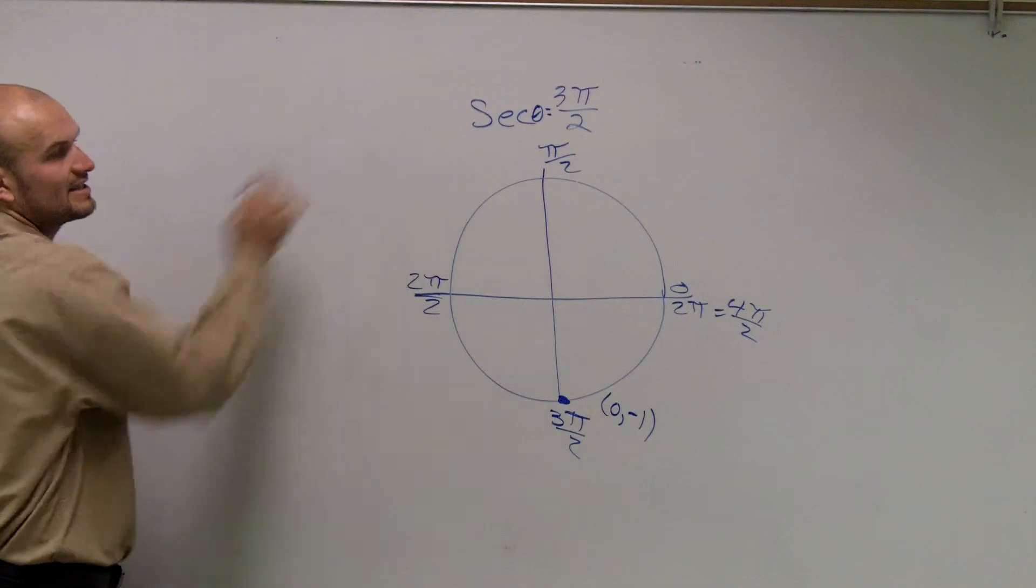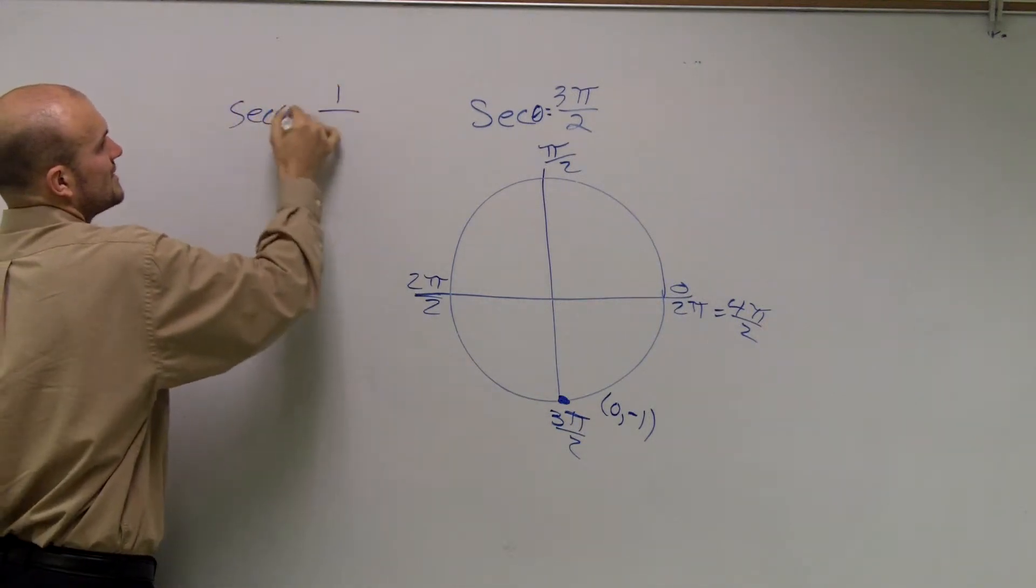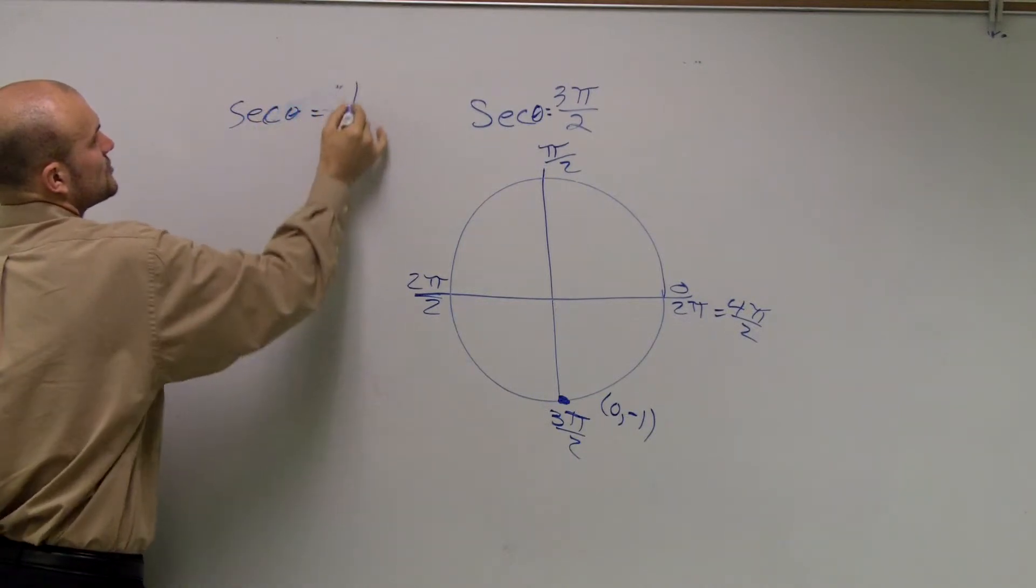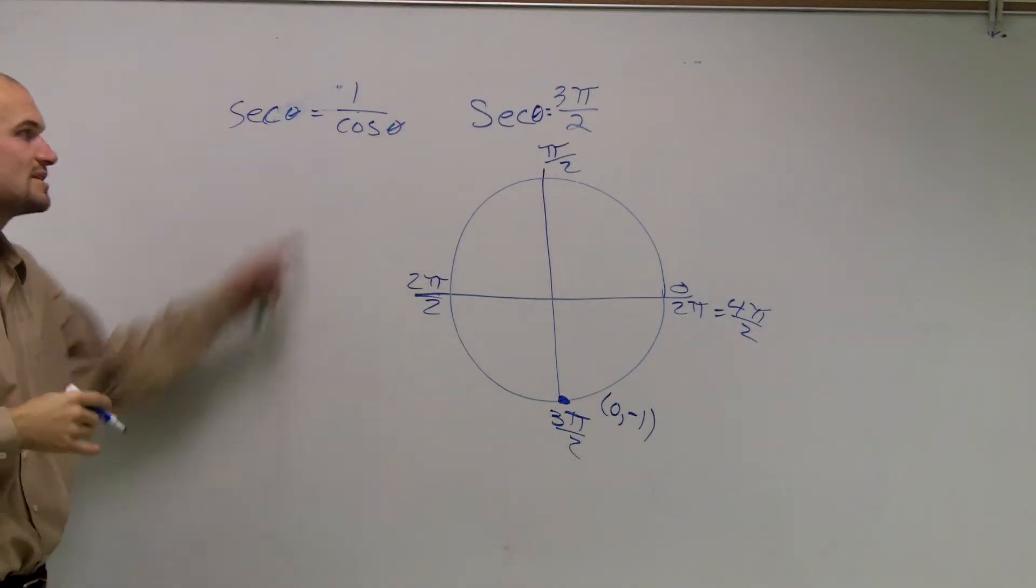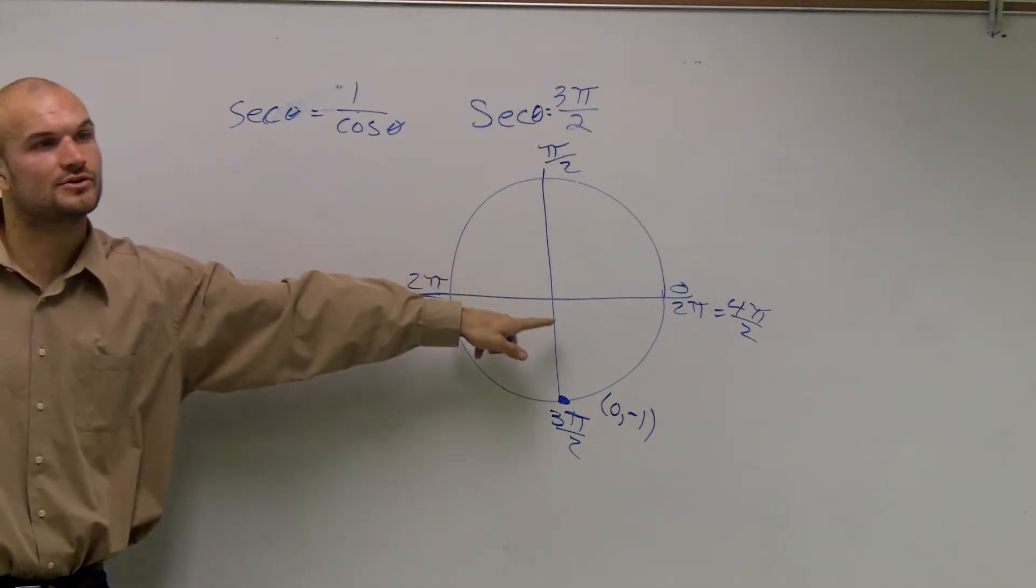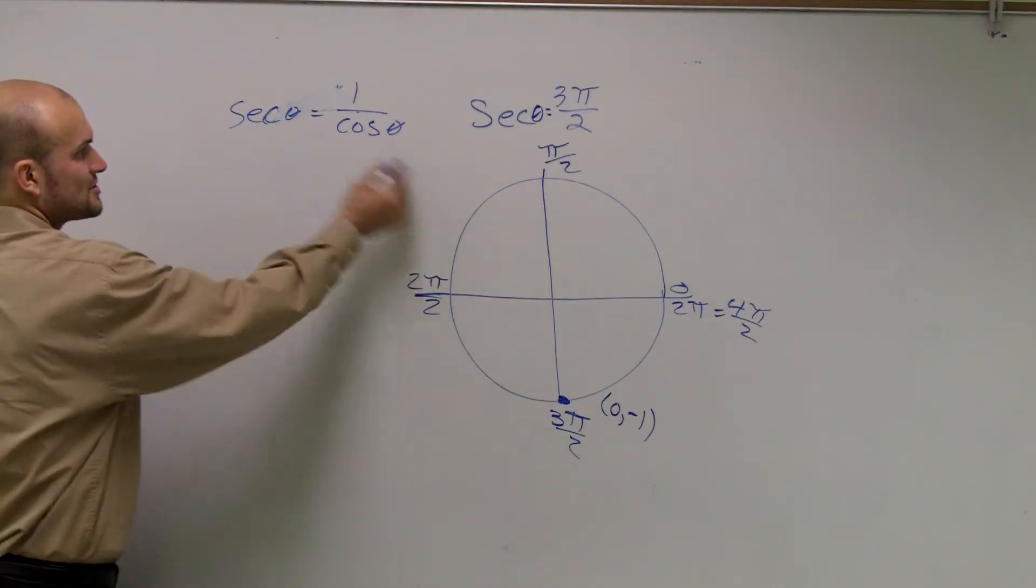They asked us to find secant. Remember, secant of theta equals 1 over cosine of theta. Cosine is x over radius. Since we're using the unit circle, the radius is 1, so cosine is just the x term.